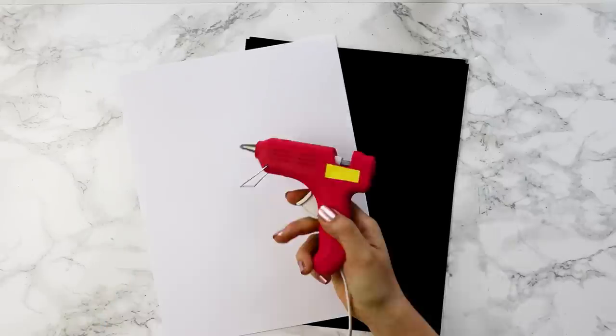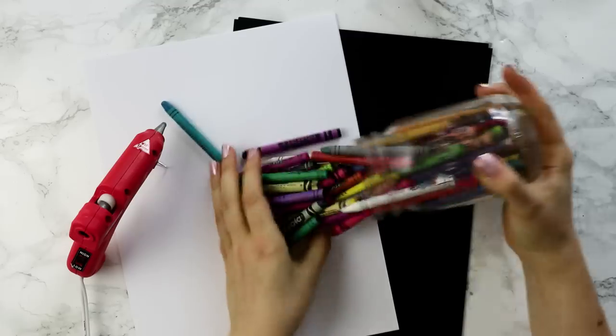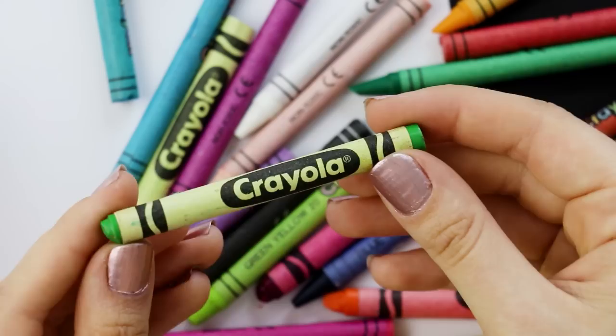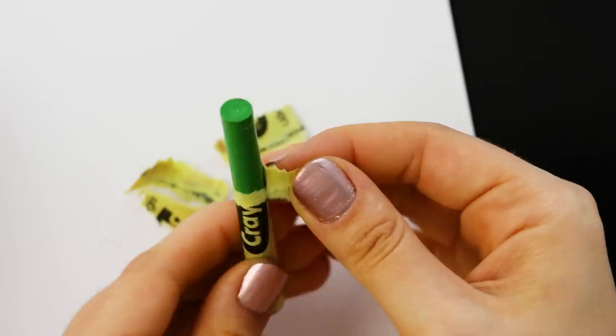So I grabbed some cardstock, obviously a hot glue gun, and my crayons. My first instinct was to use a Crayola brand crayon instead of the other off-brand ones that I had.